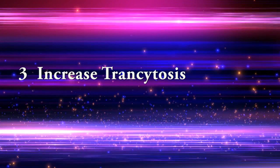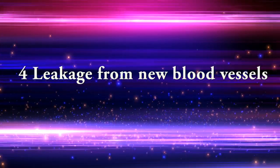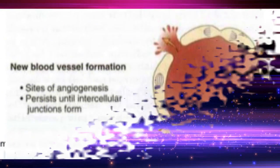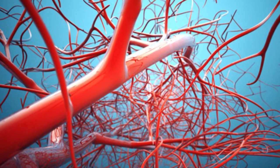Third: increased transcytosis. Transcytosis occurs through channels formed by fusion of intracellular vesicles. Fourth: leakage from new blood vessels. New blood vessel sprouts remain leaky until proliferating endothelial cells mature sufficiently to form intercellular junctions.